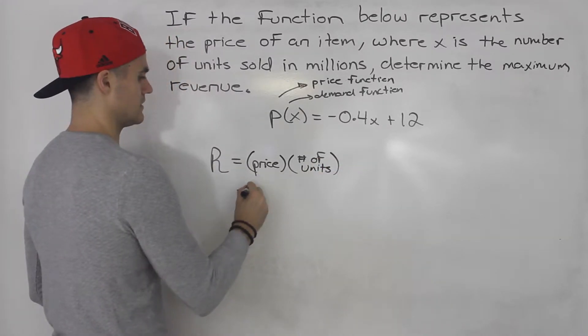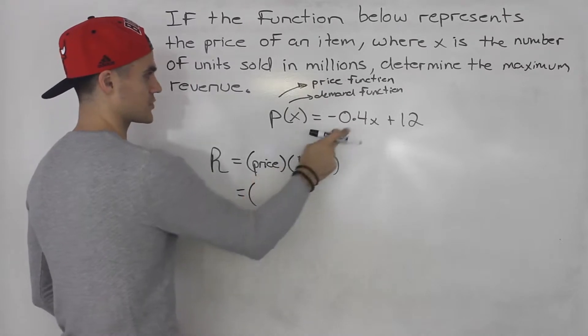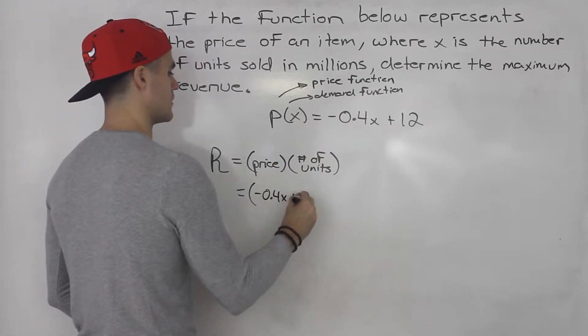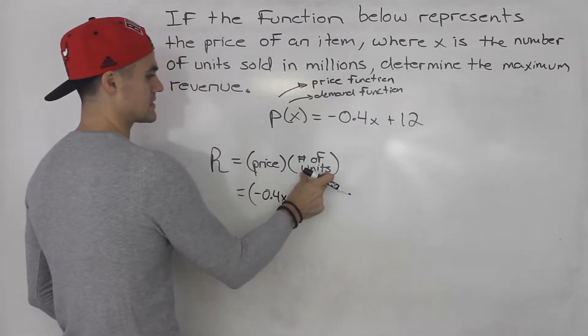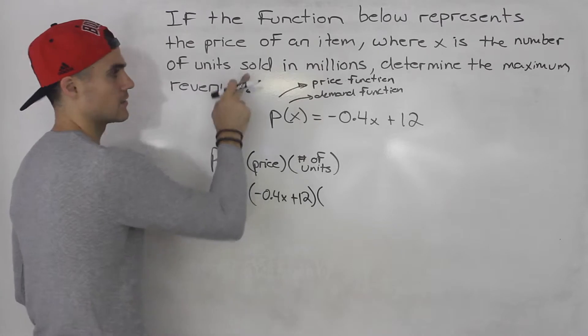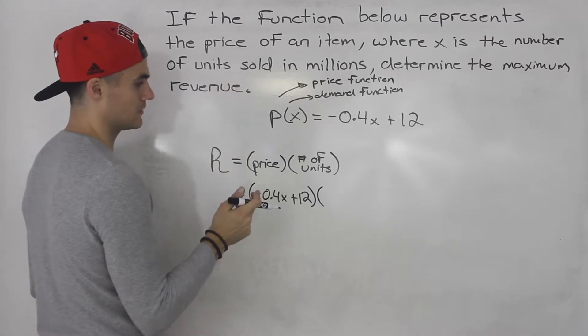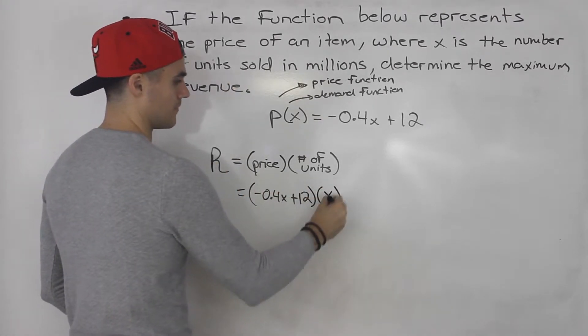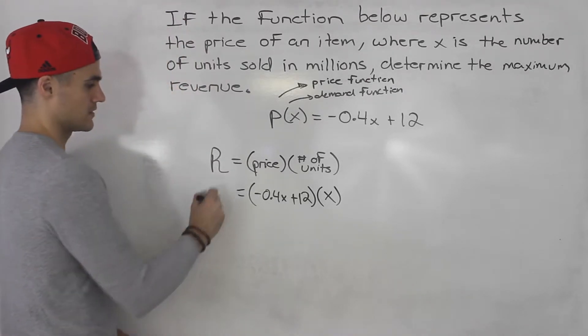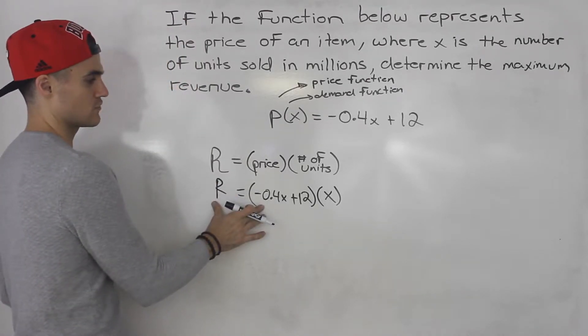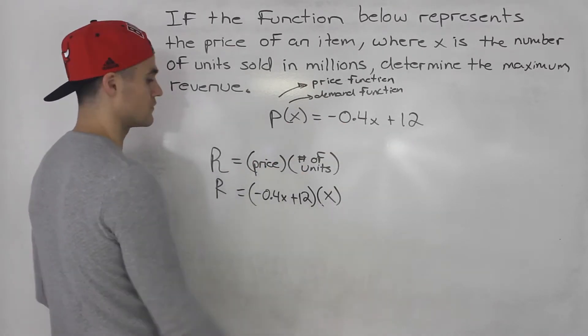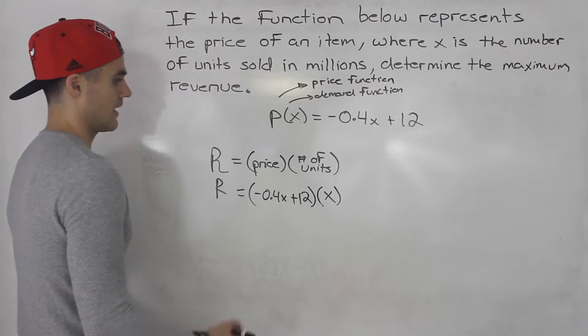So in this case we already know what the price function is. It's this here, negative 0.04x plus 12. But we need something for the number of units and notice how x is the number of units sold. It's in millions, but the number of units is just represented by x. So this here is the revenue function, the price function multiplied by x, the number of units sold.